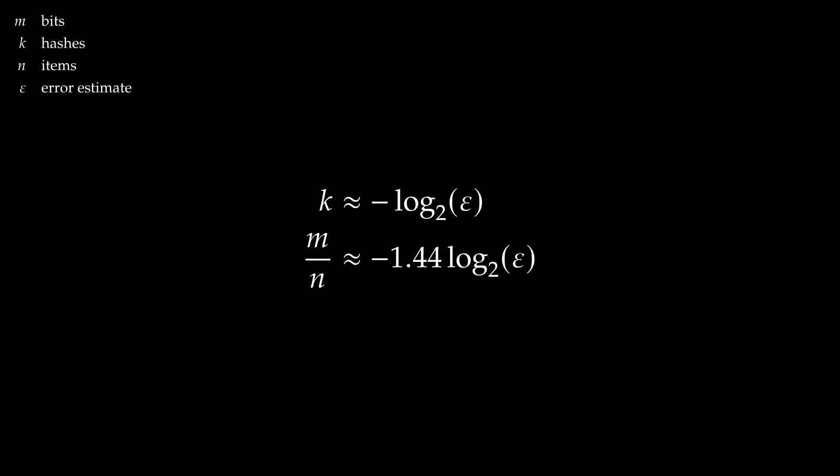So if we're okay with around a 2% false positive rate, then we could use 5 or 6 hash functions and 8 bits per element. For 10 million elements, that's just 10 megabytes of data, regardless of how large each element is, because the bloom filter doesn't store the actual elements.